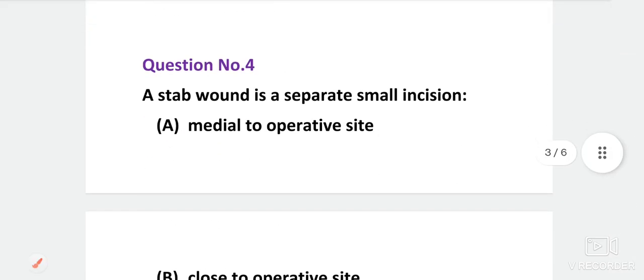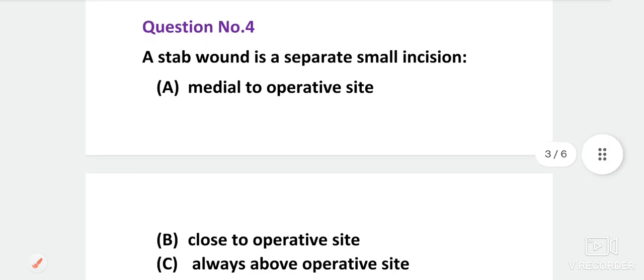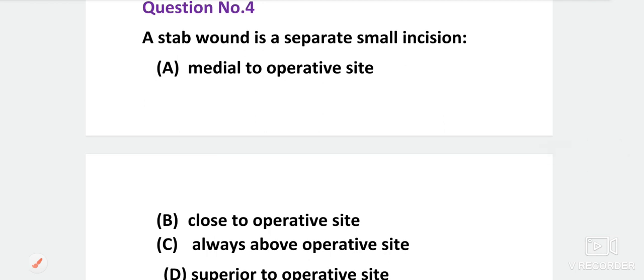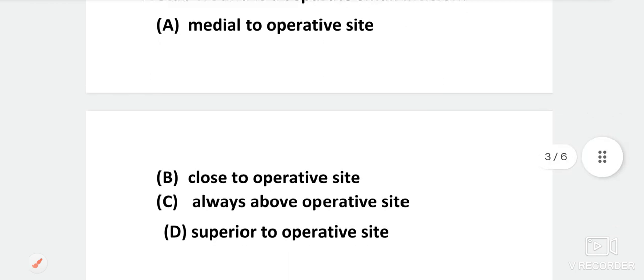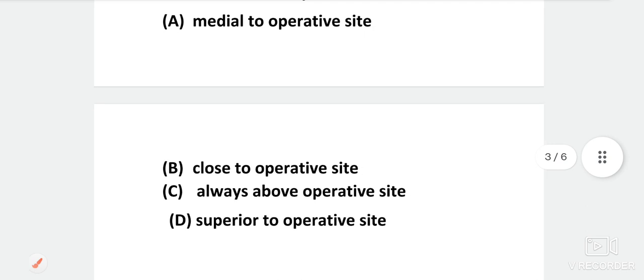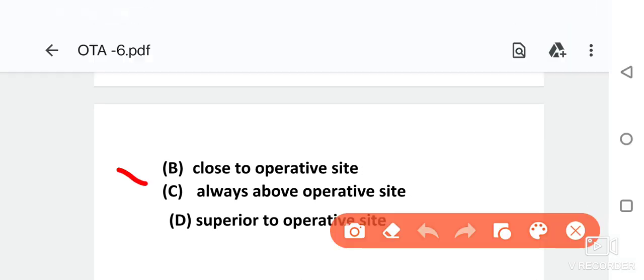Next question. A stab wound is a separate small incision that is located. Option is medial to operative side, close to operative side, always above the operative side, or superior to operative side. Let us know in the comment box. The right answer is close to the operative side.